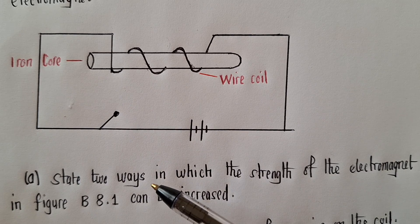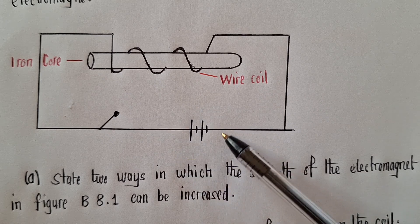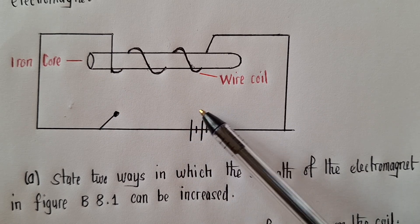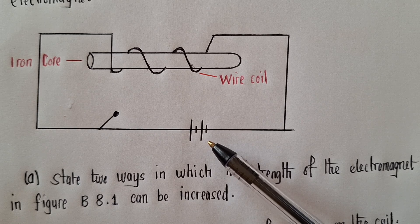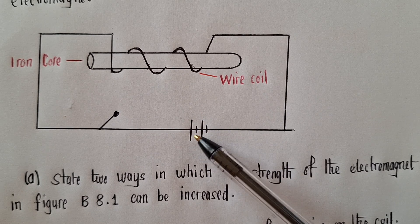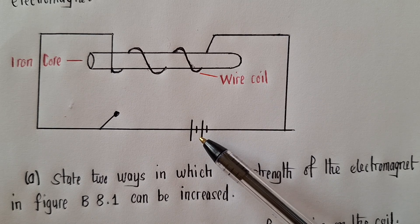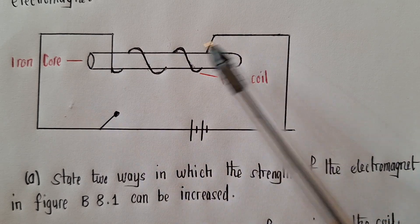The magnetism here will increase. And the other way will simply be by increasing the voltage or the number of batteries or using the battery with the higher voltage. So let's say there are two batteries. If you increase, you put 10 batteries, the magnetism here will increase.